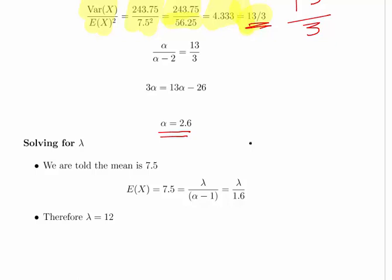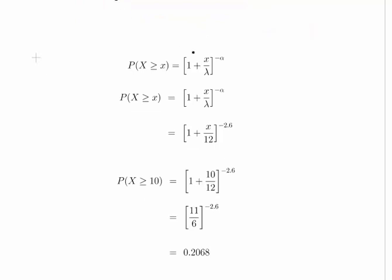We are told that the mean is 7.5. So lambda divided by alpha minus 1 is lambda divided by 2.6 minus 1, which is 1.6. Cross multiply: 7.5 times 1.6 gives you 12. So that's great. Now we have all our values.